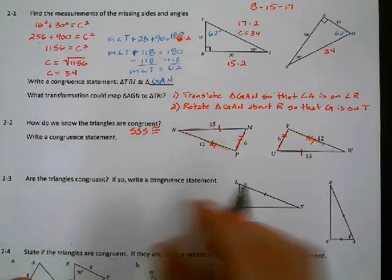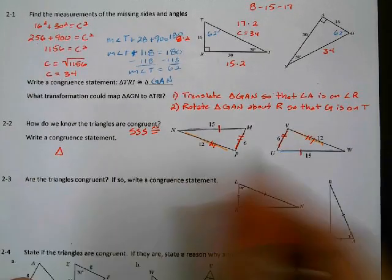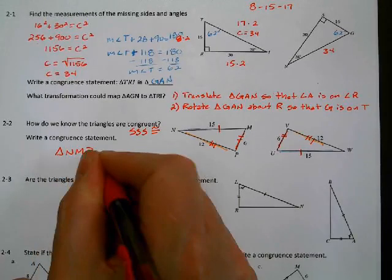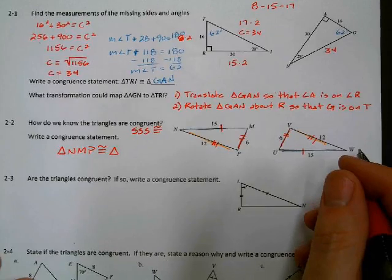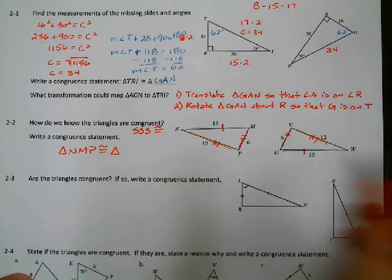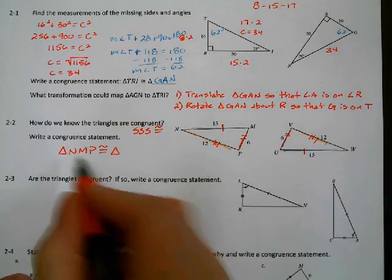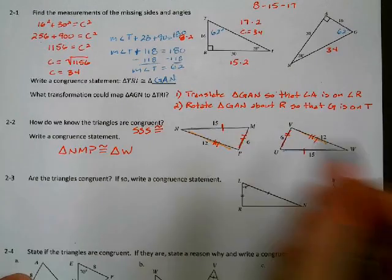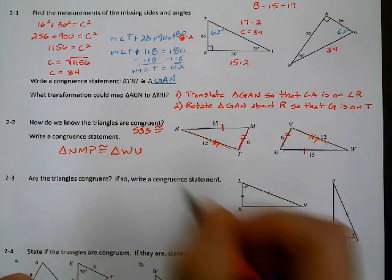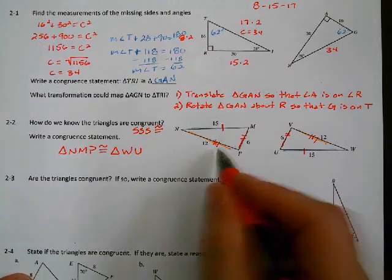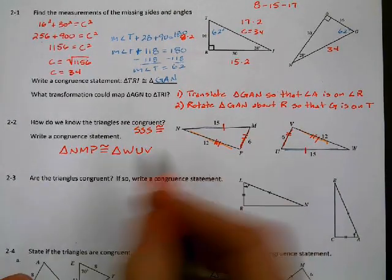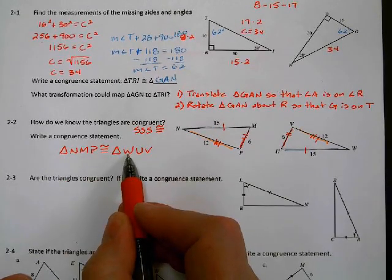Write a congruent statement — for the first triangle you can use any order, so I'll do NMP. N is the angle between 15 and 12, and W is also between 15 and 12, so N corresponds to W. M is between 6 and 15, and U is between 6 and 15, so M corresponds to U. P is between 6 and 12, and V is between 6 and 12. So triangle NMP is congruent to triangle WUV.